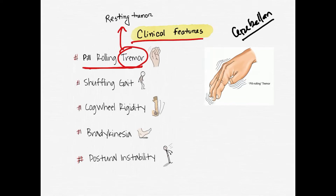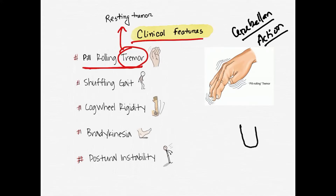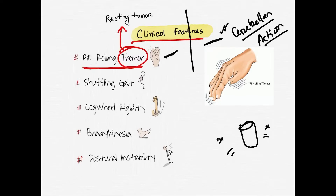What about cerebellar lesions? In a cerebellar lesion, the tremor is an intention tremor — it occurs during voluntary movement and worsens as the limb approaches the target. This is an important point to differentiate between cerebellar lesion tremor and the resting tremor of Parkinson's disease.